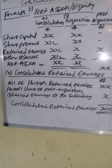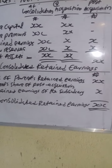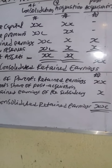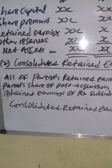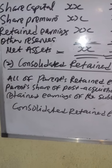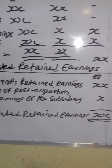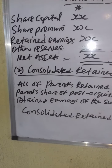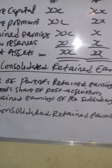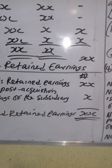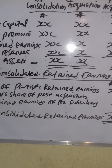We move to the second format: consolidated retained earnings. How do we do it? You will bring all of the parent's retained earnings and the parent's share of post-acquisition retained earnings of the subsidiary. Totaled together, it will give you what we have as consolidated retained earnings.